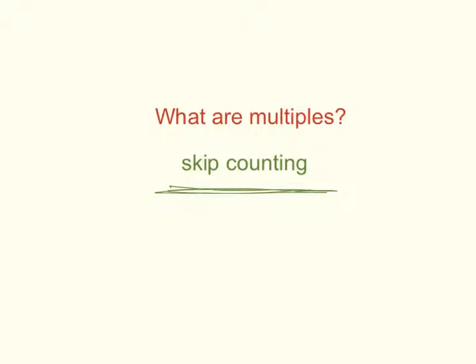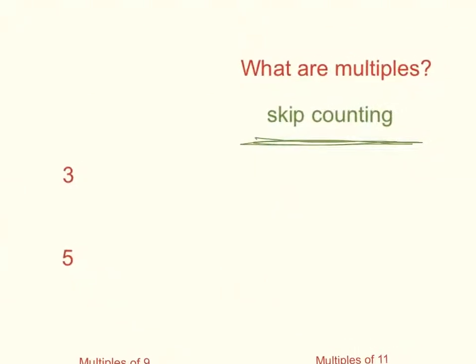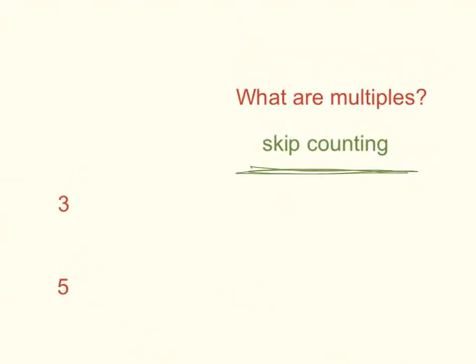So let's look over here at some examples. Here I've got 3 and 5. So when I'm looking at the multiples of 3, well the first multiple for a number is always going to be itself. So the first multiple of 3 is 3, and we know that because 1 times 3 is 3.